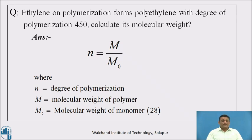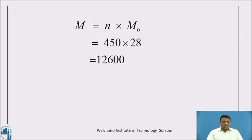The formula is: n = M / M₀, where n is degree of polymerization, M is molecular weight of polymer, and M₀ is molecular weight of monomer. The molecular weight of ethylene (monomer) can be calculated by the routine method and is 28. The modified equation becomes M = n × M₀ = 450 × 28 = 12600.